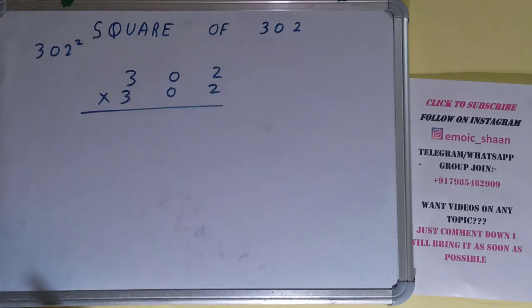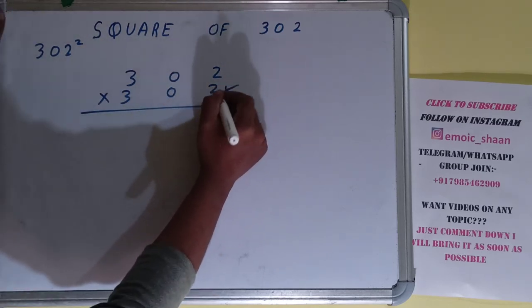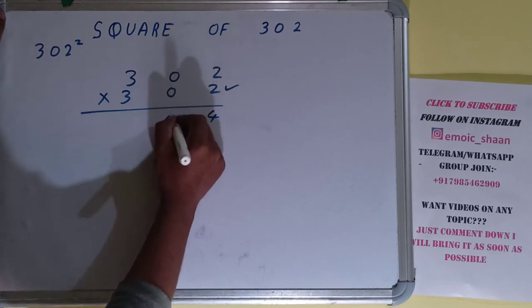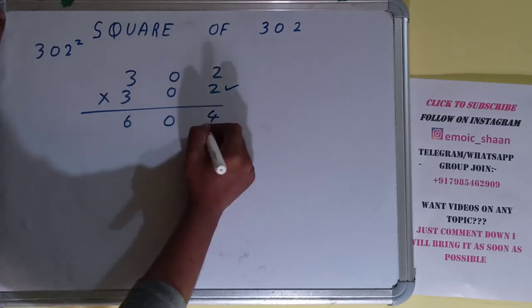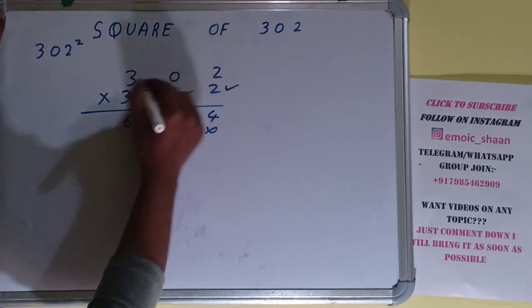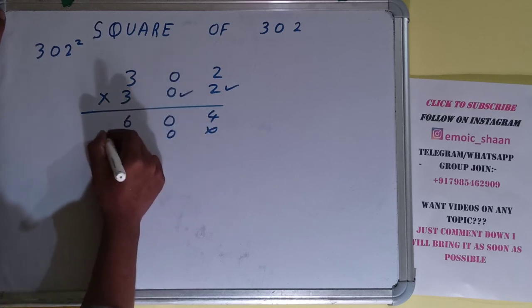And do the normal multiplication. So let's start with this. 2 × 2 = 4, 2 × 0 = 0, 2 × 3 = 6. Now this zero—zero into anything is zero, so we can just add three zeros, no problem at all.